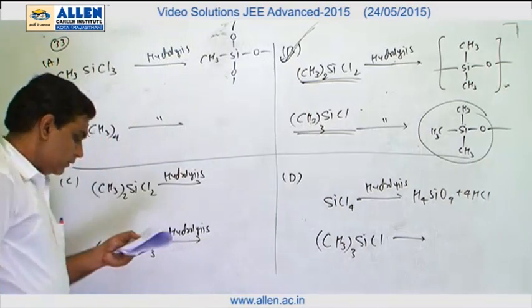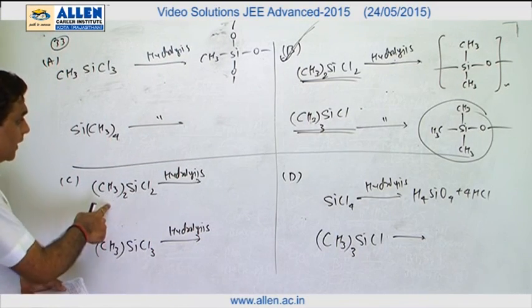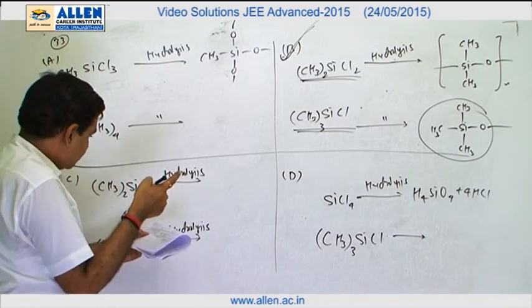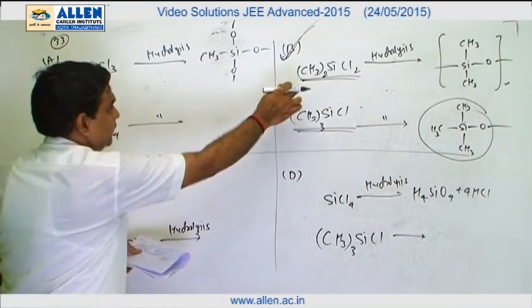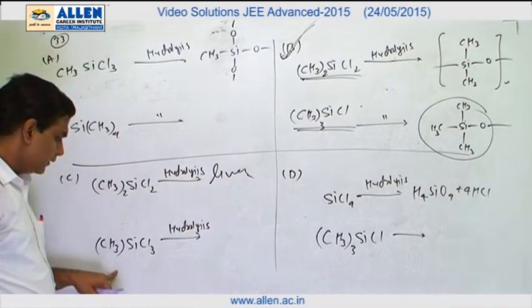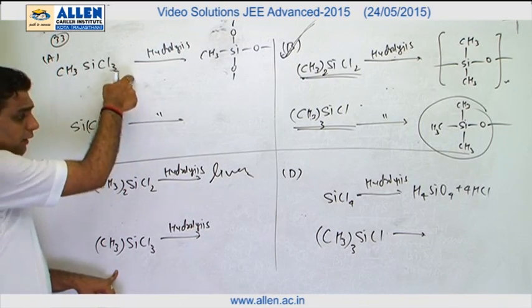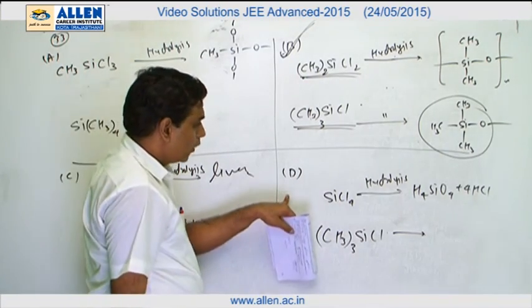B is a possible answer. Option C: (CH3)2SiCl2 hydrolysis produces linear polymer as in option B. CH3SiCl3 produces cross-linked polymer and cross-linked formation unit as in option A.